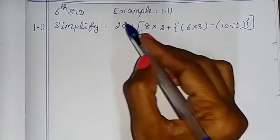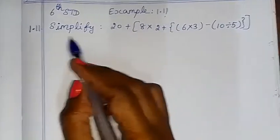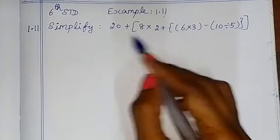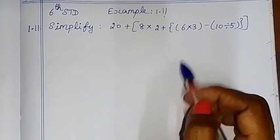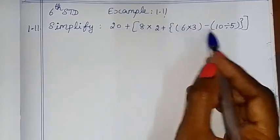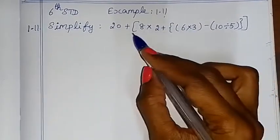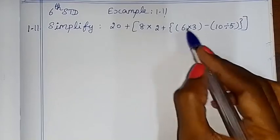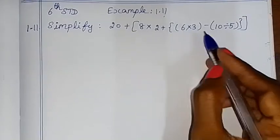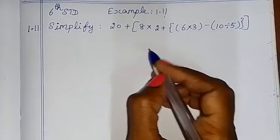Hello children! Example 1.11 — Simplify. There is an expression with many operations and three brackets. Now we can solve this.